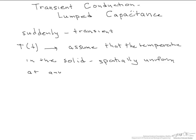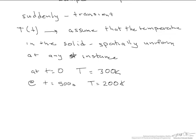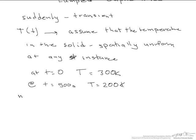For example, if you have at time equals zero, the temperature in the solid is 300K. Then at time equals 500 seconds, the temperature is 200K, and this is the temperature throughout the solid.